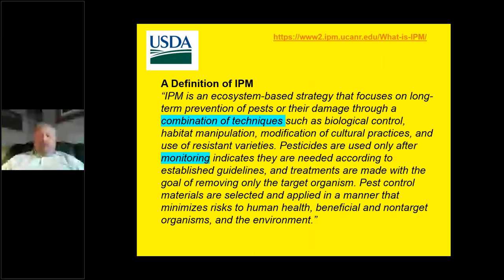Here is a definition of IPM from the University of California system, which is fitting because IPM as a concept was generated decades ago in California. IPM is an ecosystem-based strategy that focuses on long-term prevention of pests or their damage through a combination of techniques such as biological control, habitat manipulation, modification of cultural practices, and use of resistant varieties. Pesticides are used only after monitoring indicates they are needed. Pest control materials are selected and applied in a manner that minimizes risk to human health, beneficial and non-target organisms, and the environment. The key things for me have always been combination of techniques and monitoring.